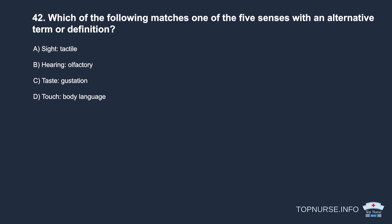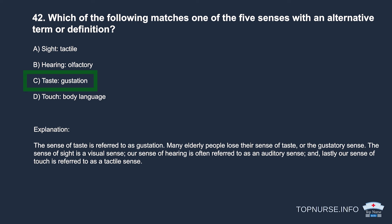Question 42: Which matches one of the five senses with an alternative term? a. Sight — tactile. b. Hearing — olfactory. c. Taste — gustation. d. Touch — body language. Correct answer: c. Taste — gustation. Many elderly people lose their sense of taste, or the gustatory sense. Sight is visual, hearing is auditory, and touch is tactile.